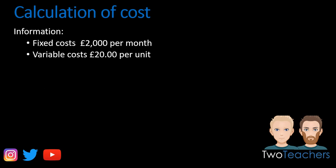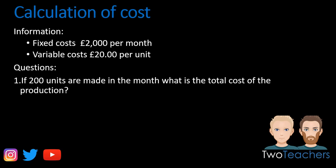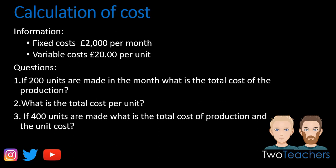Now we'll do an activity. Fixed costs are £2,000 per month and variable costs are £20 per unit. Question 1: if we make 200 units in a month, what is the total cost of production? Question 2: based on your answer to question 1, what is the total cost per unit? Question 3: if 400 units are made, what is the total cost of production and what is the unit cost? Pause the video now to have a go, then press play for the answers.